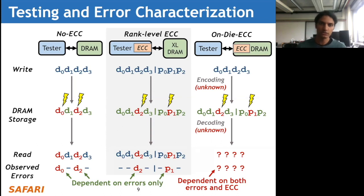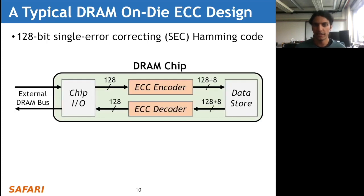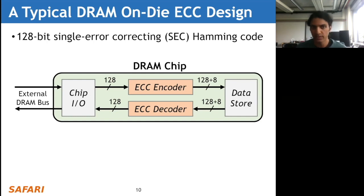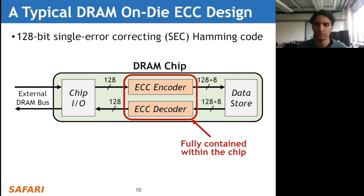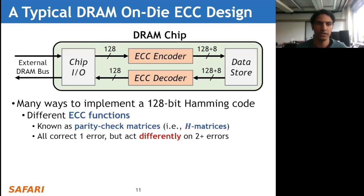A typical DRAM on-die ECC design uses a 128-bit single-error-correcting Hamming code - it operates on 128-bit data with eight parity check bits and can correct a single bit of error within the 128-plus-8-bit code word. There's an external DRAM bus that interfaces with chip I/O, and the ECC encoder and decoder are fully contained within the DRAM chip, making them invisible from outside. There are many ways to implement this 128-bit Hamming code, corresponding to different ECC functions known as parity check matrices or H matrices.